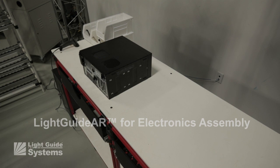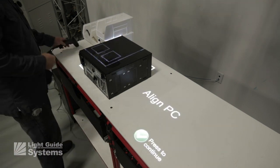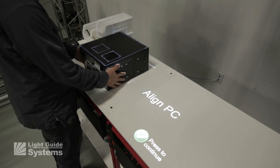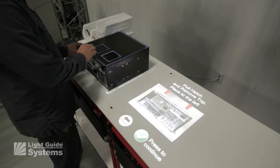Light Guide Systems is the ideal visual guidance solution for electronic assemblies, including PCs and workstations. The process begins with a barcode scan, which initiates the light guide work instructions associated with that part number.